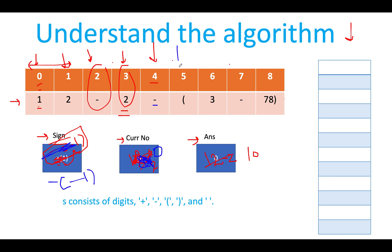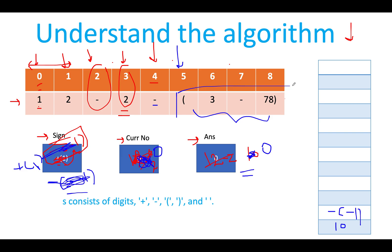Continuing, we see an opening bracket. This is where the core stack concept comes in. We need to keep track of whatever answer we have calculated so far, because we want to evaluate the inner expression first. So we dump the answer variable (10) onto the stack. We also push the current sign variable (minus 1, representing negative) onto the stack. Then we reset the sign to plus (1) and the answer to 0 for evaluating the bracket section.